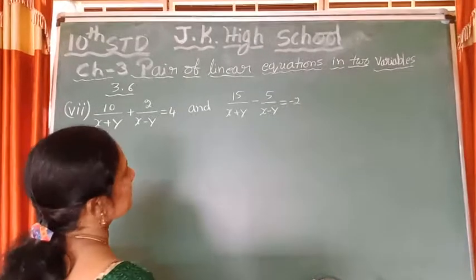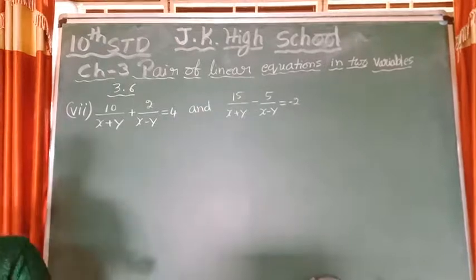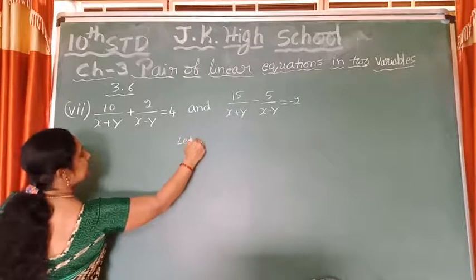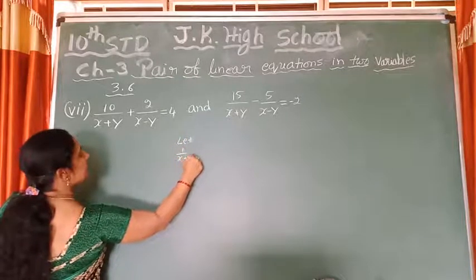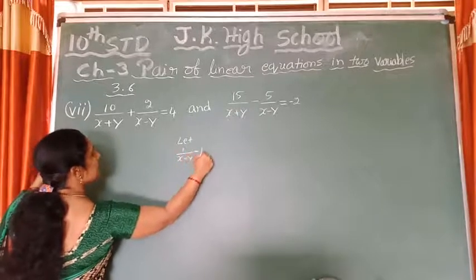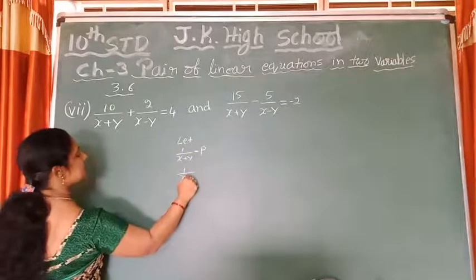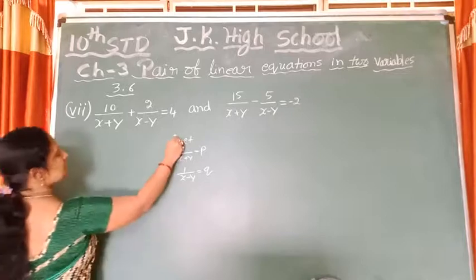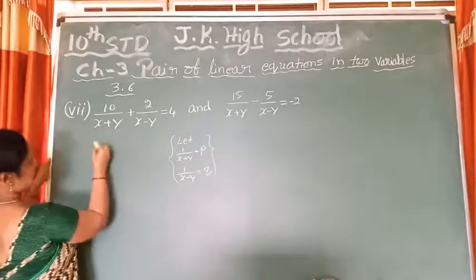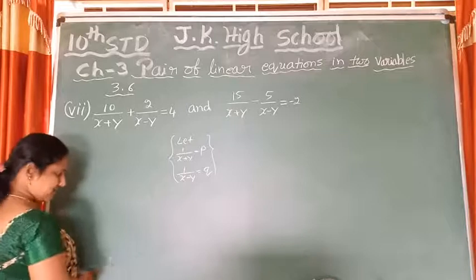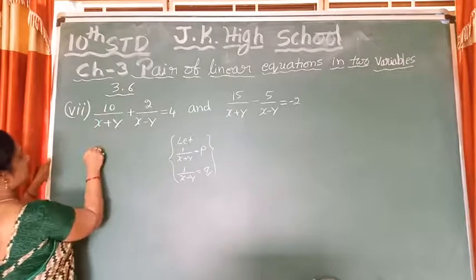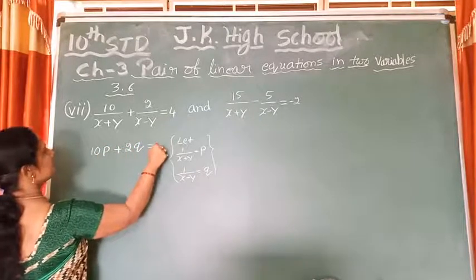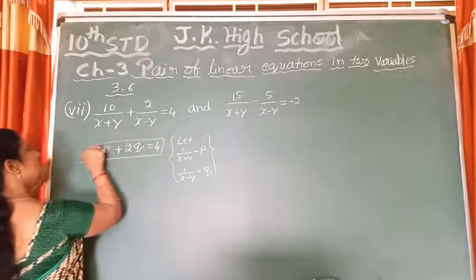These two equations are also in the form of fractions. So we will consider: let 1 by (x plus y) be P. What is there in the form of fraction, I am taking as P and Q. So this question reduces to 10P plus 2Q is equal to 4. You call this equation number 1.